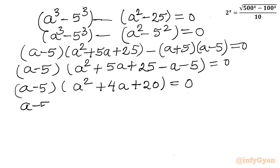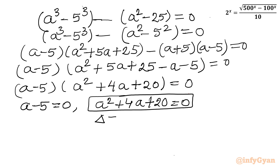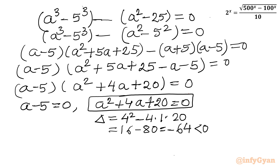So either a - 5 = 0 or a^2 + 4a + 20 = 0. Let me check the discriminant of the quadratic: Δ = b^2 - 4ac = 4^2 - 4(1)(20) = 16 - 80 = -64. Because of the negative discriminant, complex solutions are generated, so we reject this quadratic.